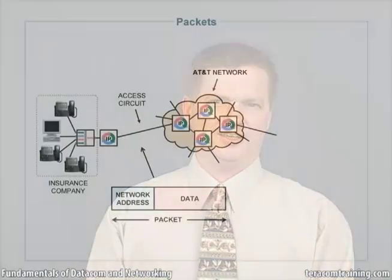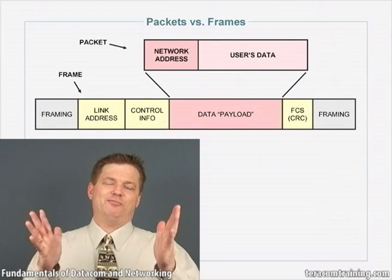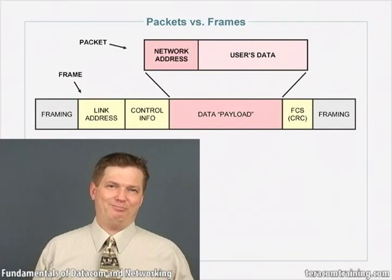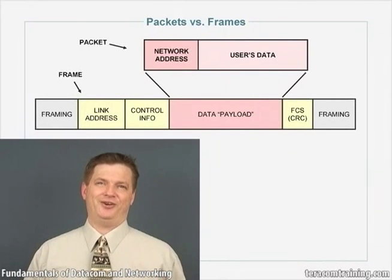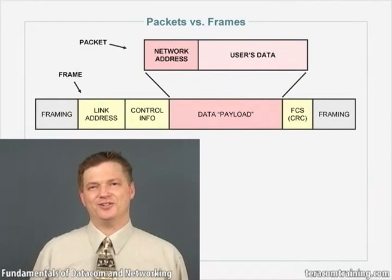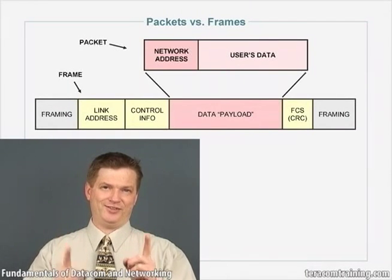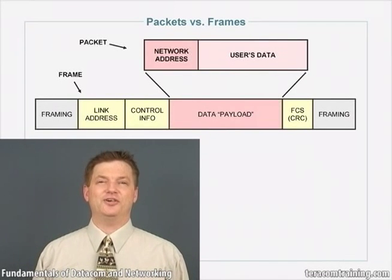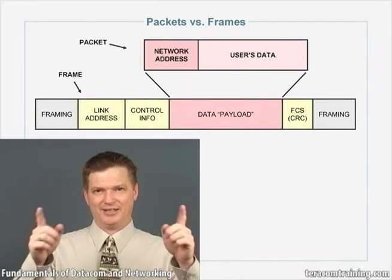How does this fit in with packets? When we transmit a packet from the insurance company to AT&T over an access circuit, we want to make sure that the packet gets there with no errors. So we take the packet and put it in a frame. The purpose of a frame is to take a block of data, put a reliable error detection mechanism on it, some local control information, and framing, transmit it on a circuit, and re-transmit it if something goes wrong. Once successful, we've moved that block of data — which is a packet — to the correct computer on the same circuit with no errors. Packets get carried inside frames.